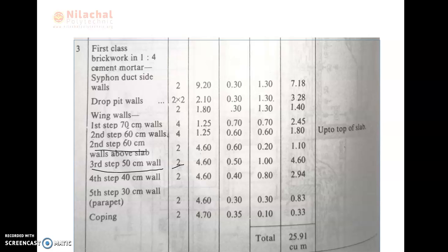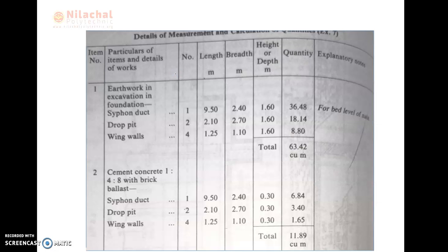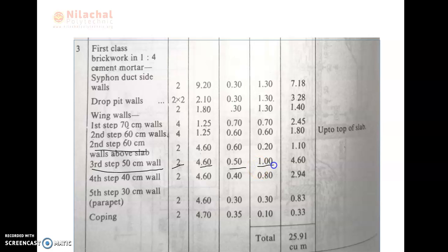So the length is the same — 4.60 — and the base is equal to 50 cm or 0.50 m. Then we can define the height. The height is 50 cm fixed, provided here. The height is 100 cm. So we write down the height is 100 cm or 1.00 m. The total value is 2 × 4.60 × 0.50 × 1.00, which is equal to 4.60 m³.